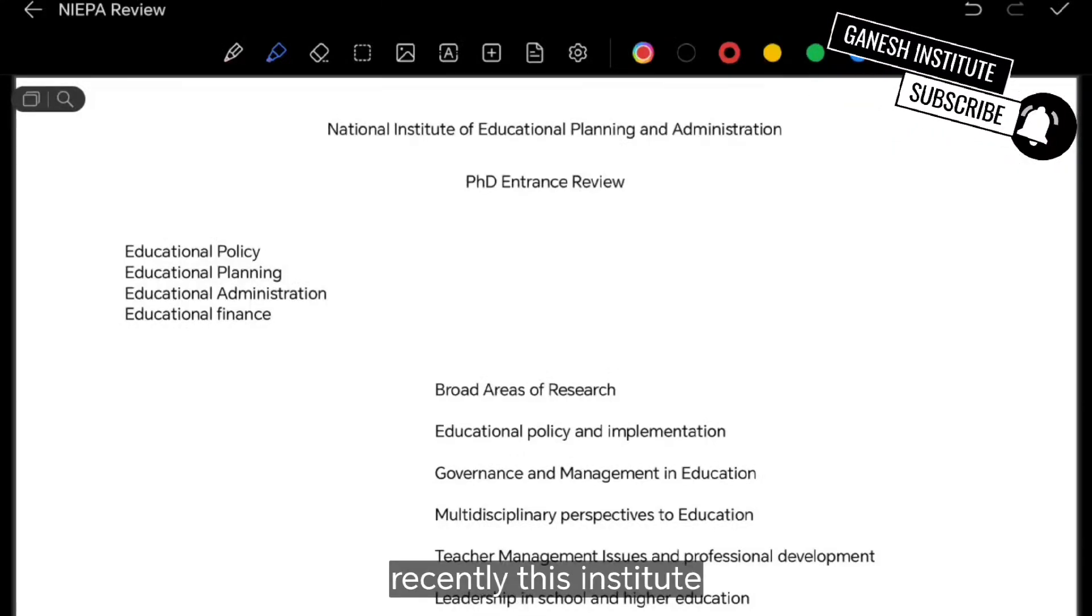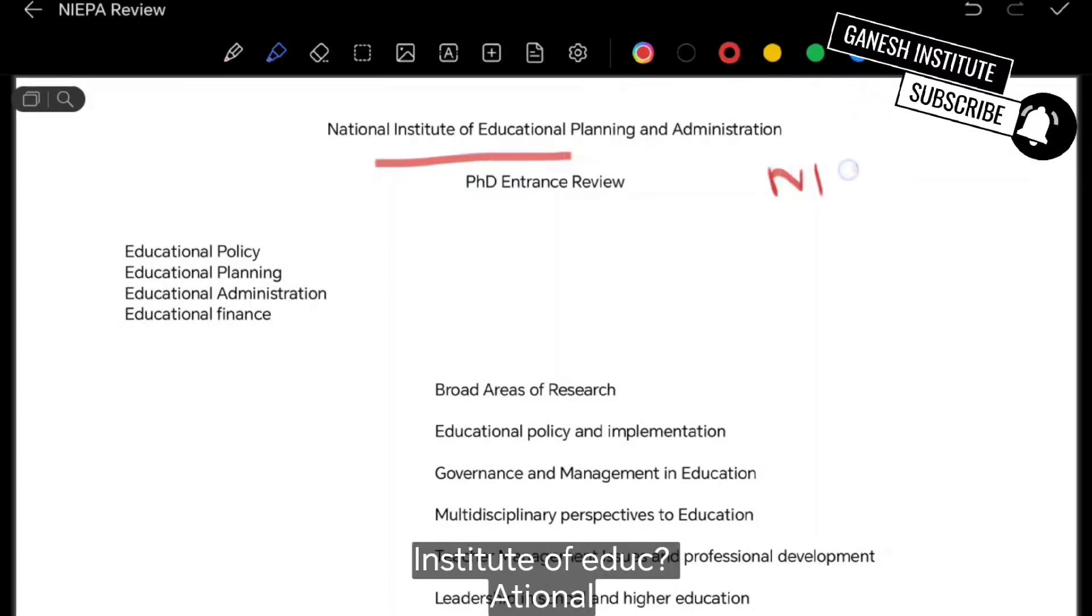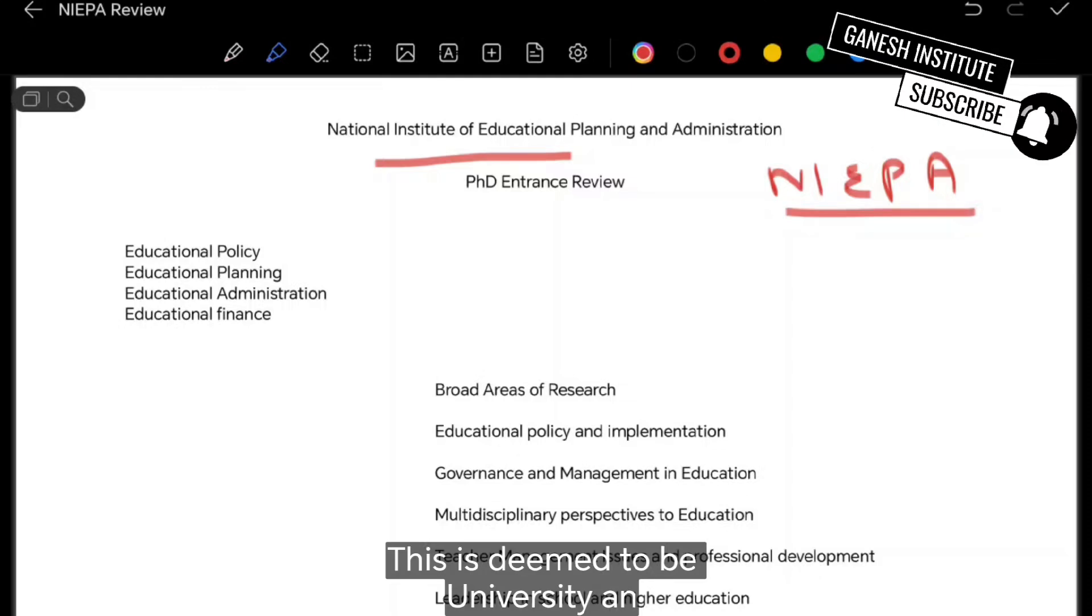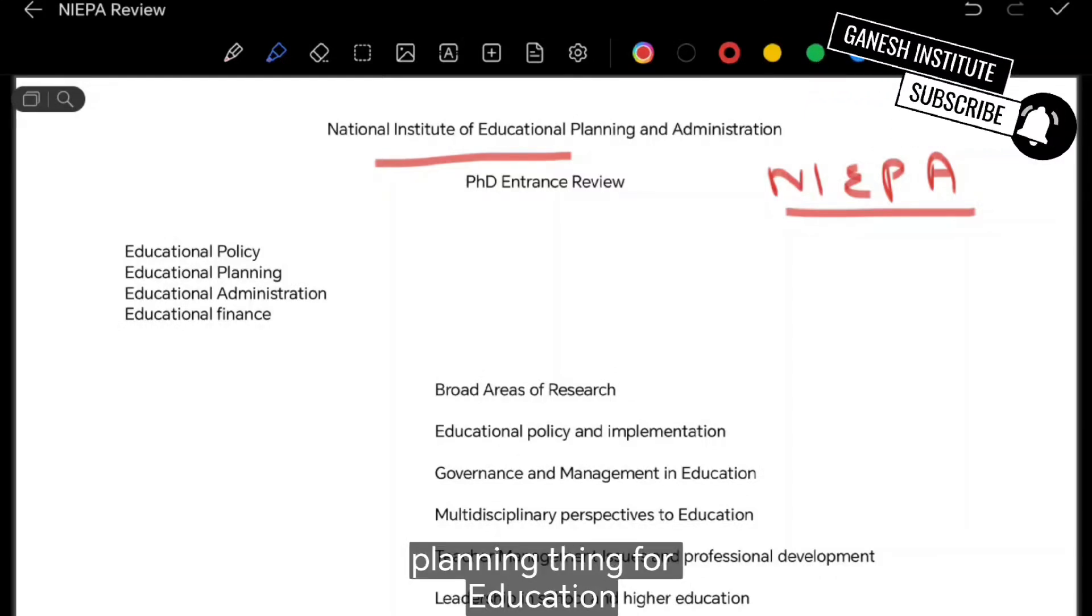So what happens recently, this institute NEPA, National Institute of Educational Planning and Administration, this is deemed to be a university, an autonomous university, which does administration and planning for education.